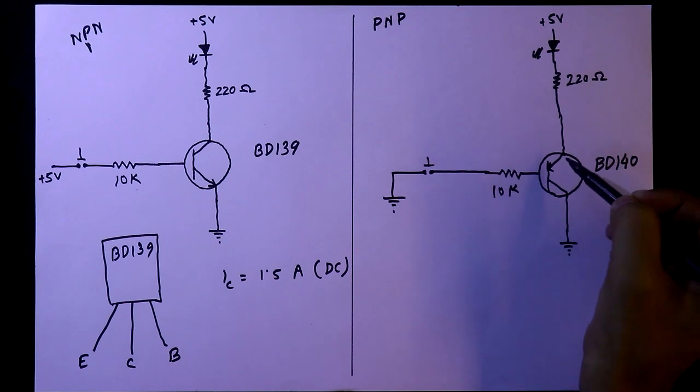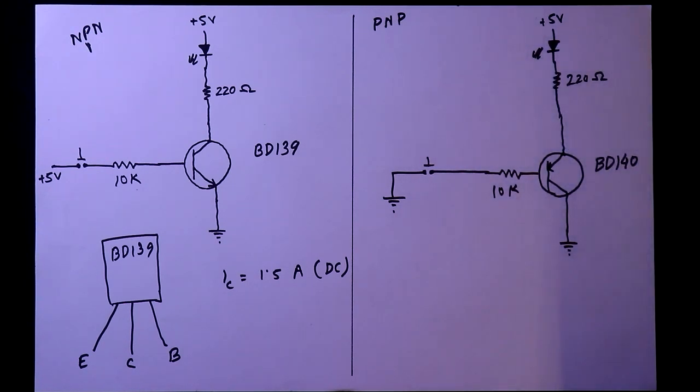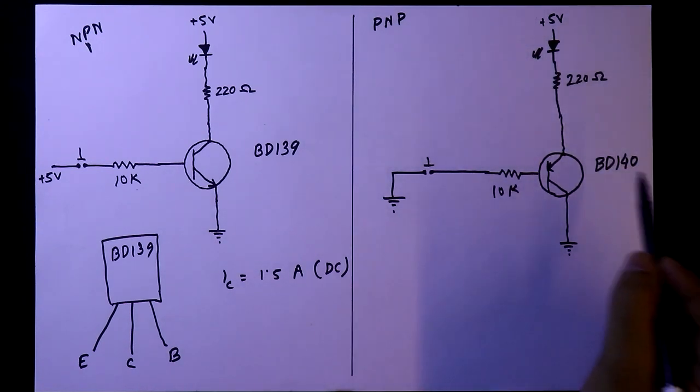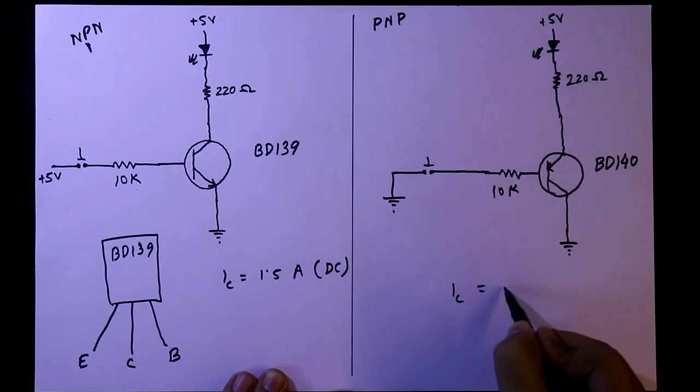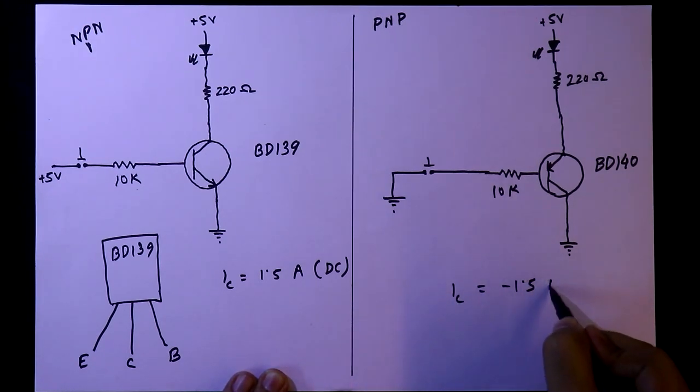And here we have to connect positive voltage with the emitter. And the pin diagram of BD140 is the same as BD139. The maximum collector current is minus 1.5A DC.